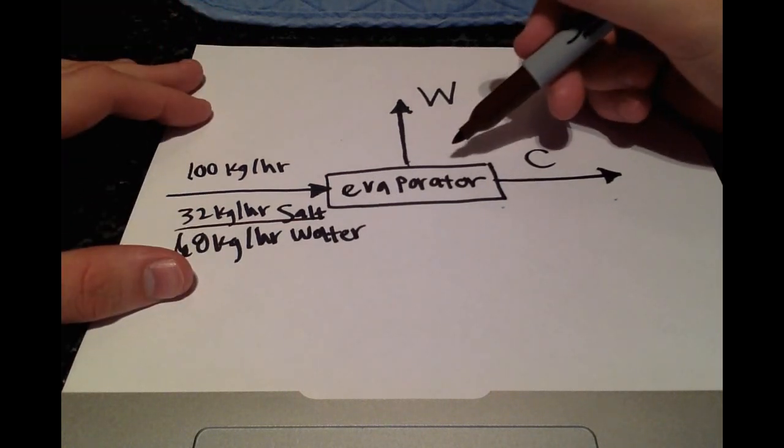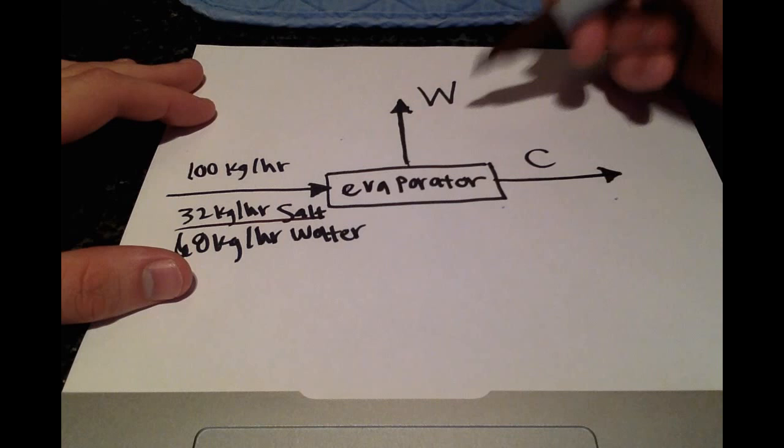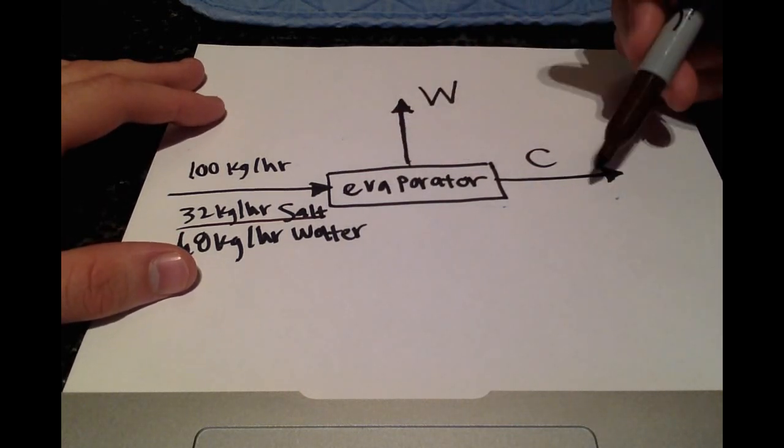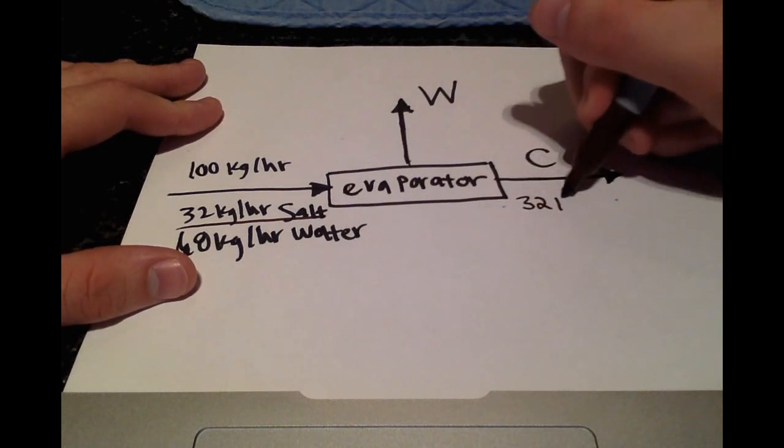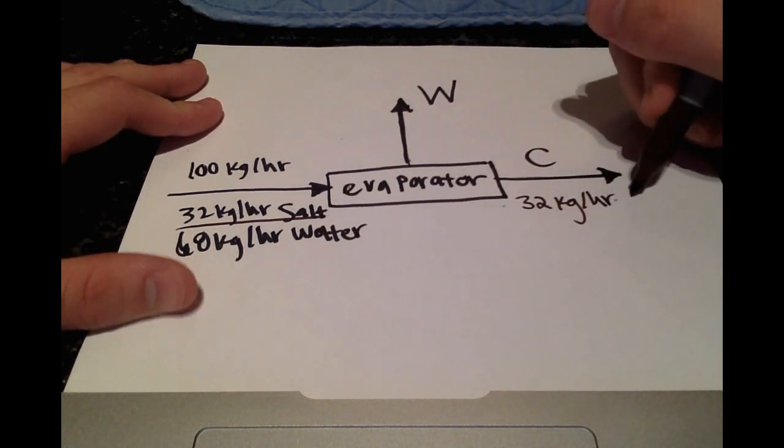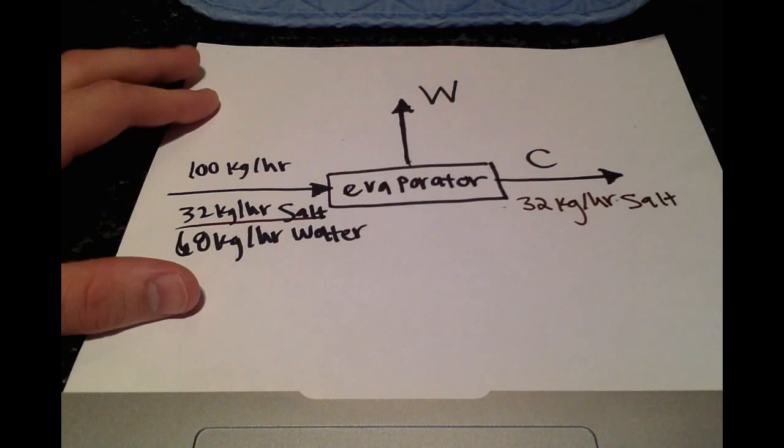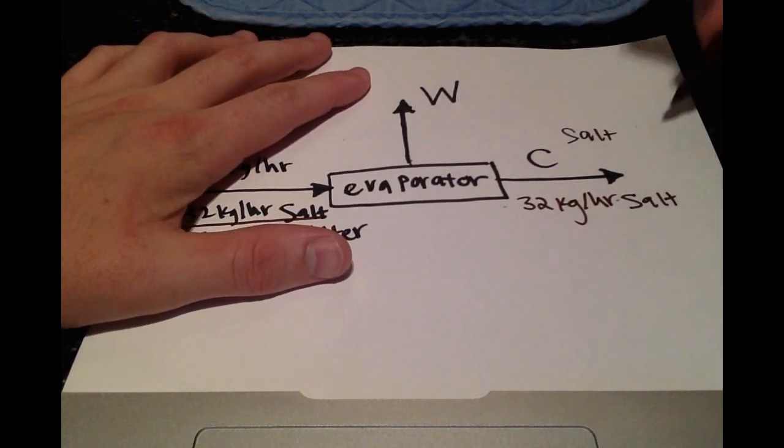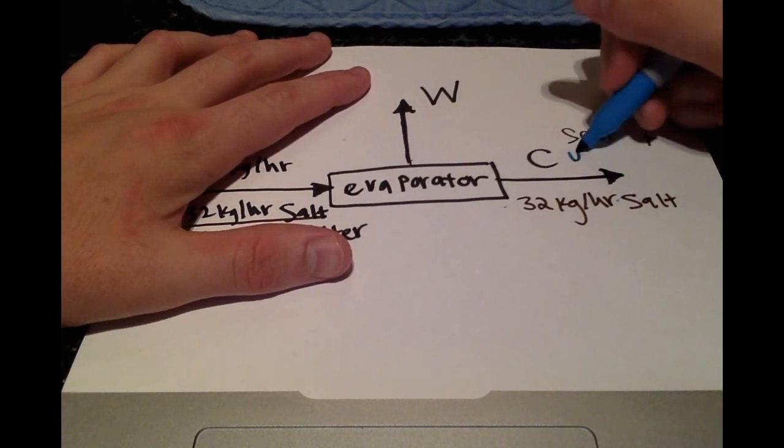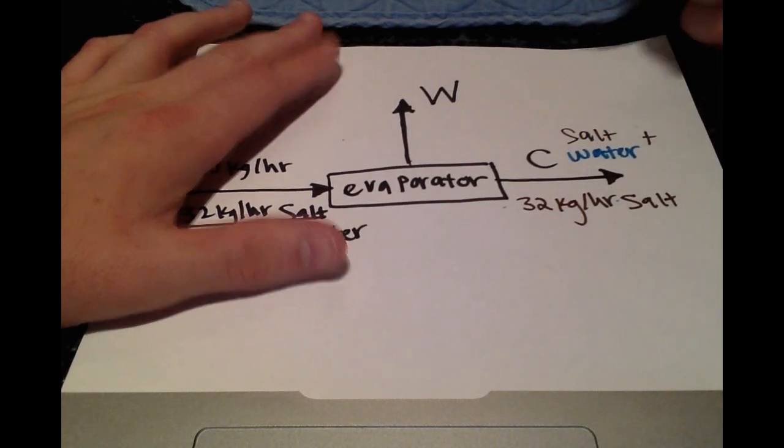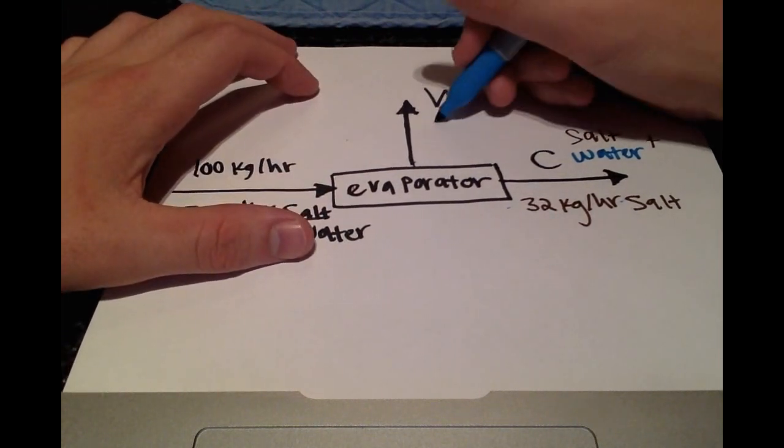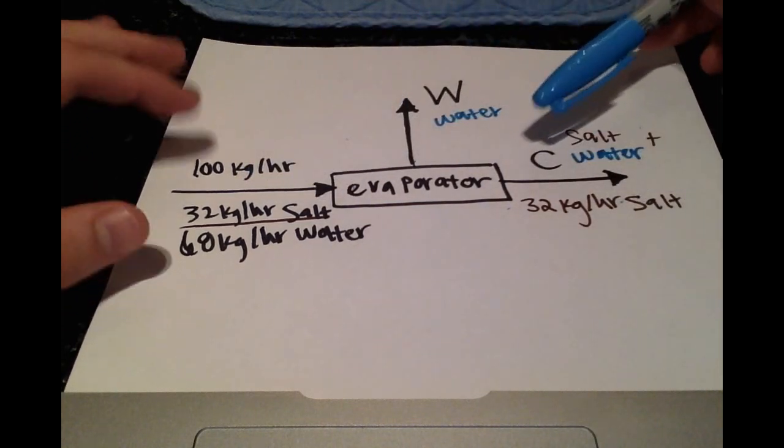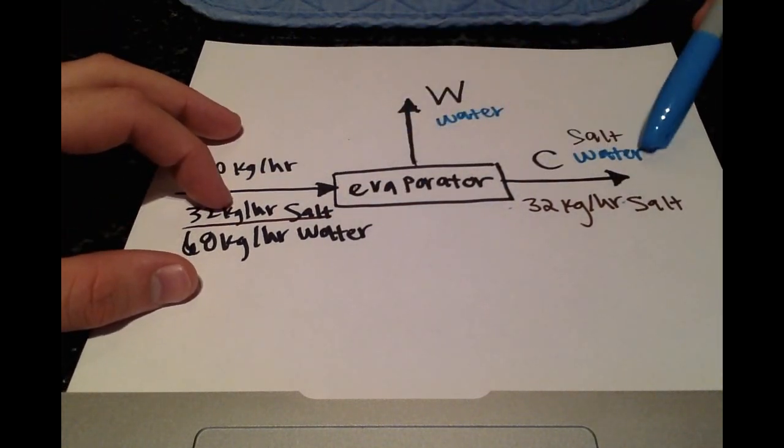And we know that evaporating we have just water by itself, so all the salt is going into the concentrated solution stream. So that's 32 kilograms per hour of salt. We know in the concentrated solution we have salt and water, and evaporating we just have the water. So it's pretty easy to see that all the salt that's coming in is going out through the concentrated stream.